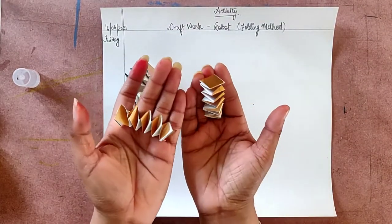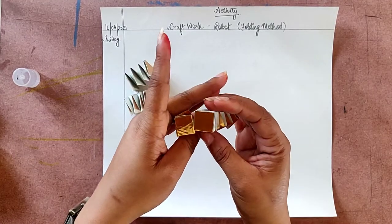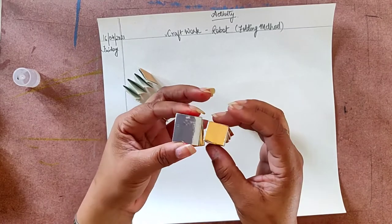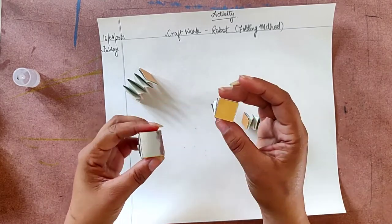Now see, these are two hands. The size of this is small as compared to this. This is leg portion and this is hand portion.